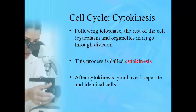After telophase, the rest of the cell goes through cell division — all the organelles and all the cytoplasm, which have already been doubled, now split: half goes one way and the other half goes the other way. That process is called cytokinesis. When cytokinesis is complete, you have two separate and identical cells. Think of it like a copy machine: you start with one cell, go through mitosis and cytokinesis, and now you have two identical cells.